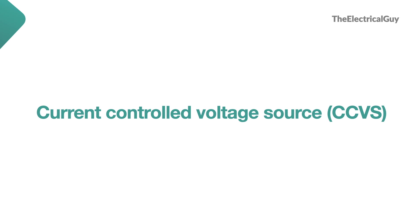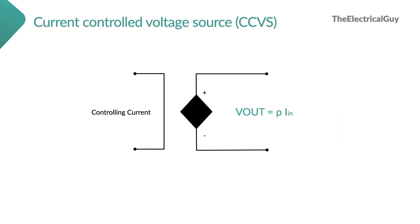The next one is current controlled voltage source, or CCVS. You can see the symbol for that on your screen. In this case we are giving current as input and using that current we are controlling the output of this particular voltage source, hence the name current controlled voltage source. The constant used here is Rho. V_out equals Rho times the current input. The unit for the constant Rho is volts per ampere.